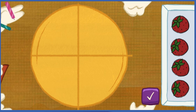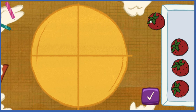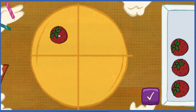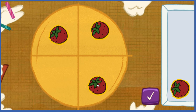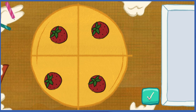Let's decorate the cake so every piece has the same number of toppings! To move your toppings, click on them with your mouse, and click again to drop them! When you're done, hit this button!